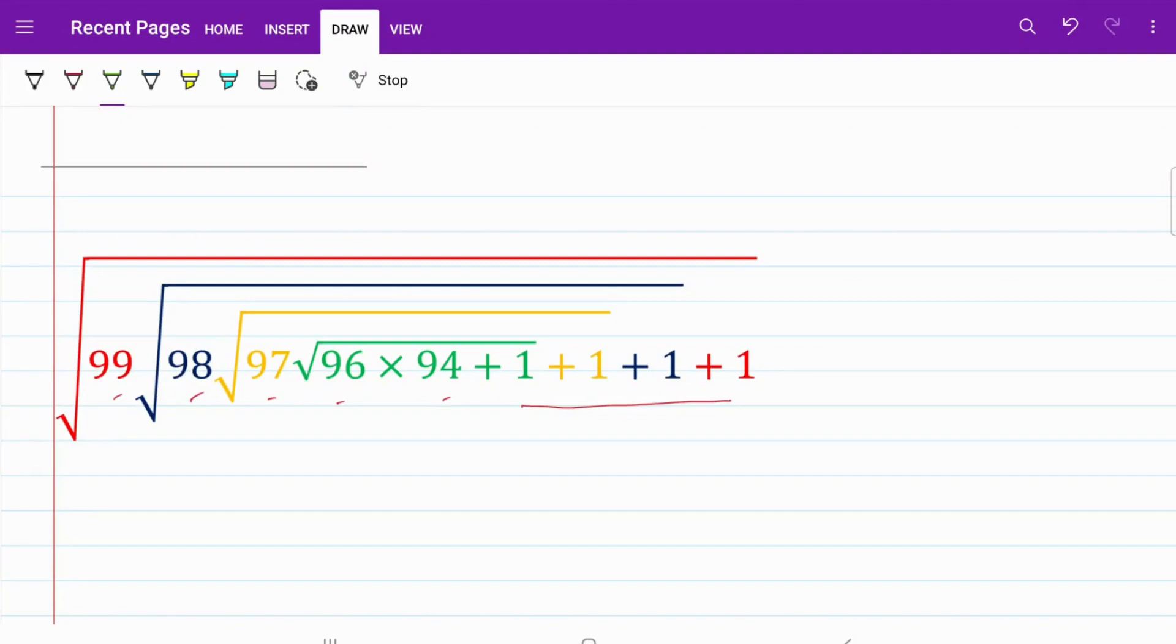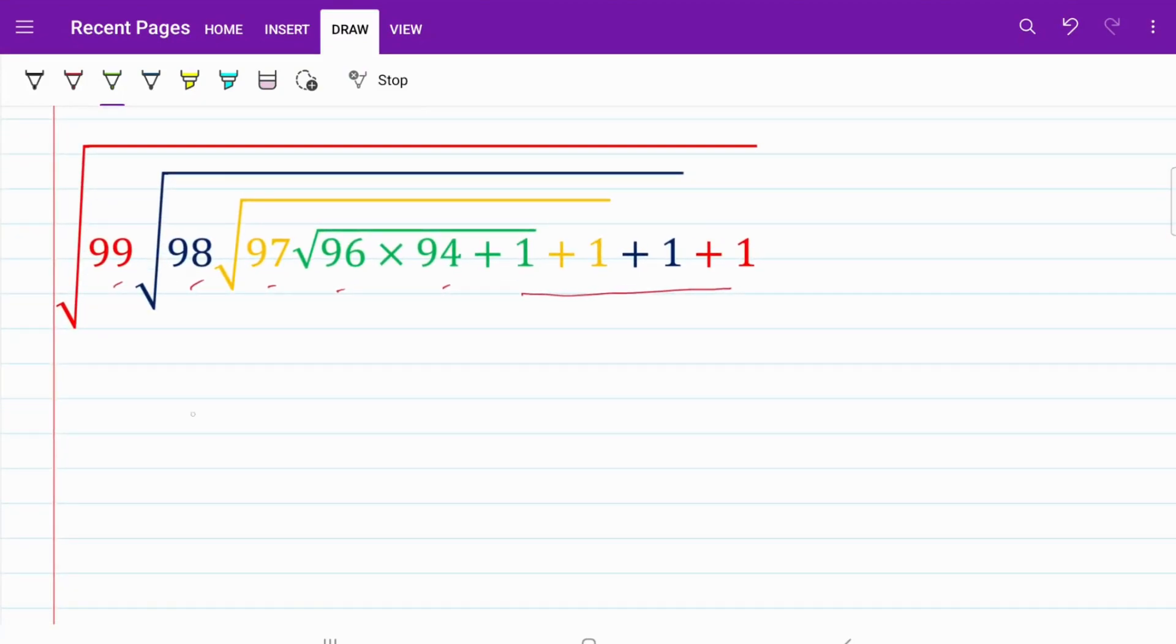Let's start with the green square root. I have 96 multiplied by 94 plus 1, and the whole thing is contained within a square root. I can rewrite this in terms of 95, meaning I will have a square root of 95 plus 1 multiplied by 95 minus 1, followed by the original plus 1 in the back.